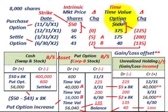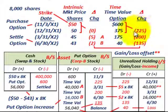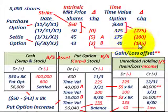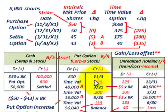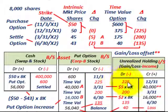Now we deal with the time value portion — simply the change in the option's value from period to period. Starting at $600, it moves down to $375, a decrease of $225. Then it moves down to $175, a decrease of $200. Then it moves down to $40, a decrease of $135. These reductions in the option's time value reduce our put option account and are recorded as unrealized holding losses on the income statement — $225, $200, and $135 respectively.